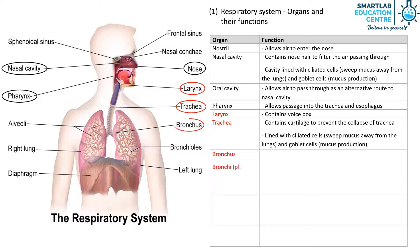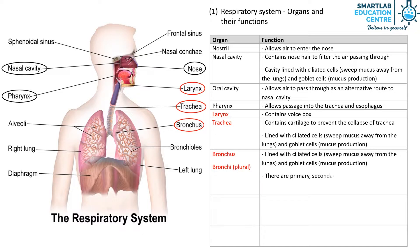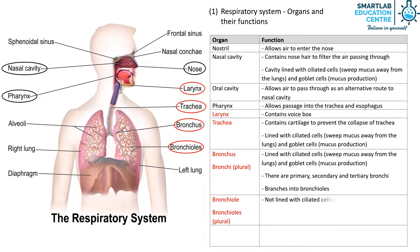The bronchus, or bronchi, is also lined with ciliated cells and goblet cells. There are different types of bronchi: the primary, secondary, and tertiary ones. The bronchus branches out into bronchioles, which are not lined with ciliated cells or goblet cells.